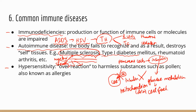People with type 1 diabetes have an immune system that treats the insulin-producing beta cells as foreign cells, so it kills those cells, leaving no cells to make insulin. That's why type 1 diabetes patients have very little insulin in the body. Rheumatoid arthritis is another autoimmune disease where the joint tissues are attacked by the immune system.